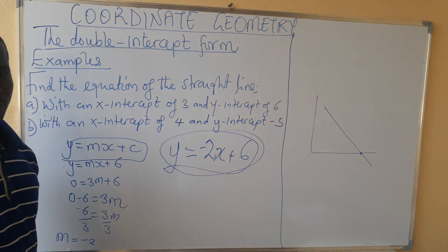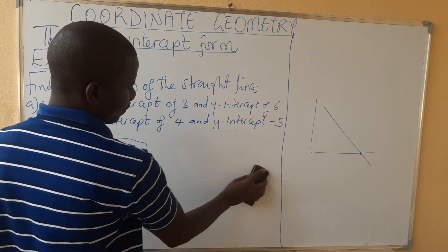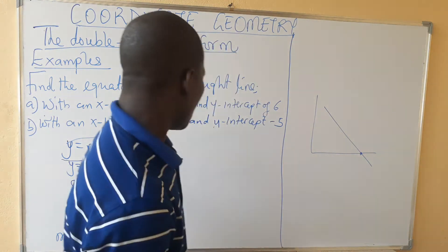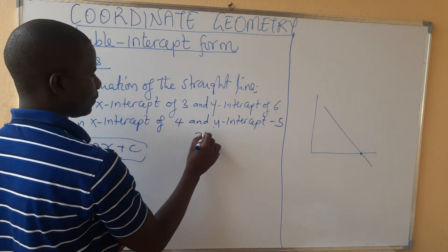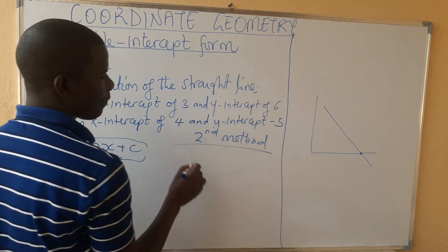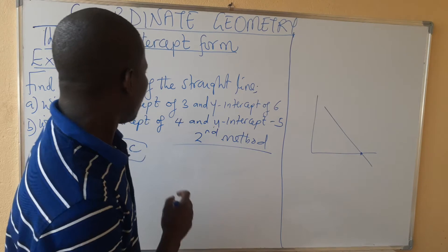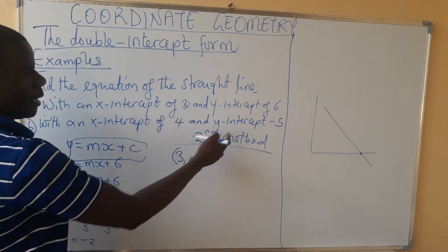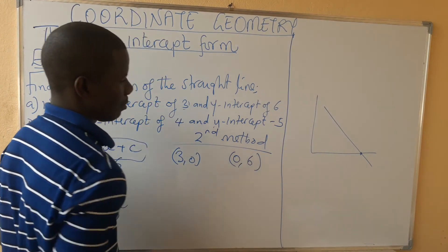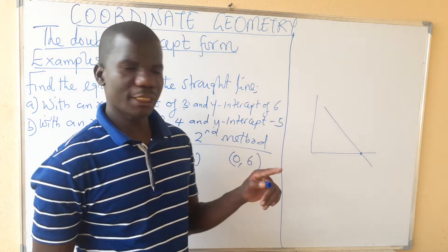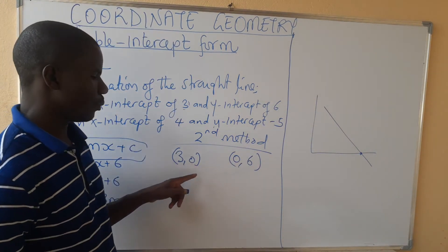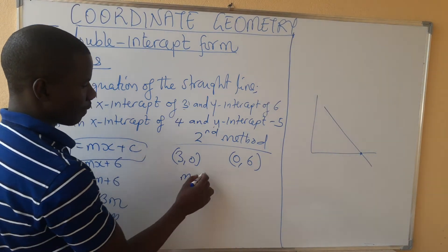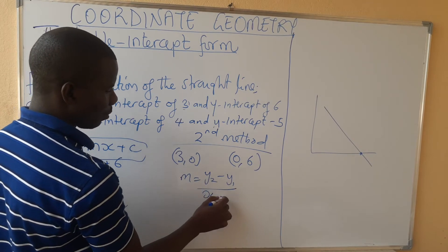There are two methods we can use. This is one method. The other is where you find the gradient using coordinate form. The x-intercept gives the point (3, 0), and the y-intercept gives the point (0, 6). On the y-intercept, the x-coordinate equals 0; on the x-intercept, the y-coordinate equals 0. You can use these to find the gradient using the formula y2 minus y1 over x2 minus x1.